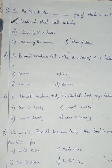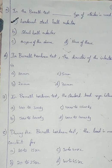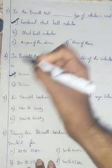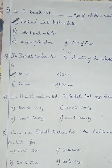Question number 6. In the Brinell hardness test, the diameter of the indenter is: Option A 10 mm, Option B 20 mm, Option C 5 mm, Option D 30 mm. The diameter of the ball is option A, 10 mm. We are using a hardened steel ball indenter, so I am going with option A, 10 mm.